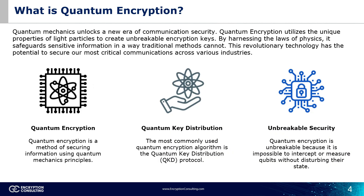What is quantum encryption? Encryption involves converting data into an unreadable format that requires a specific key for decryption. Traditional symmetric encryption relies on mathematical algorithms to encode and decode data using a public key for scrambling data and a private key for unscrambling it. In contrast, quantum encryption leverages principles of quantum mechanics. Here, information is encoded using quantum states of particles like photons. These states create a unique key for encrypting and decrypting data. Quantum encryption relies on randomness and unpredictability inherent in quantum mechanics, rendering it more secure than traditional methods.